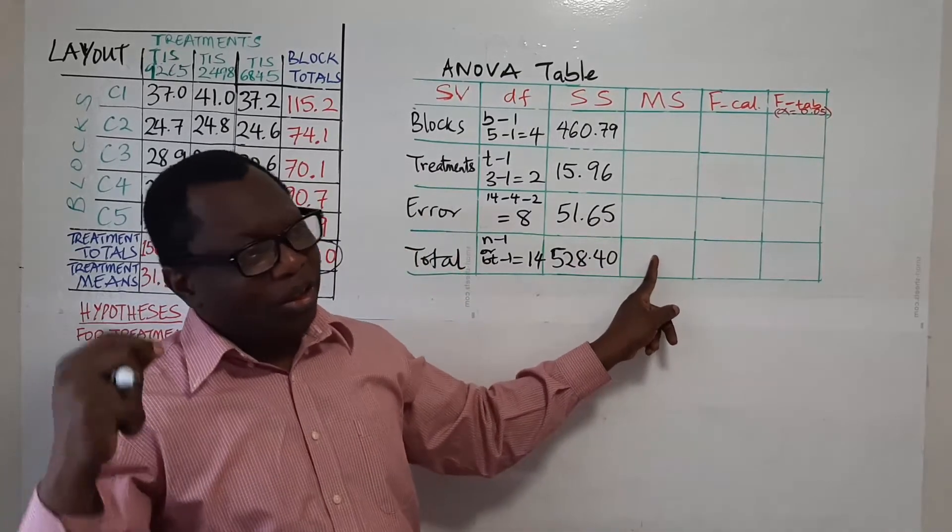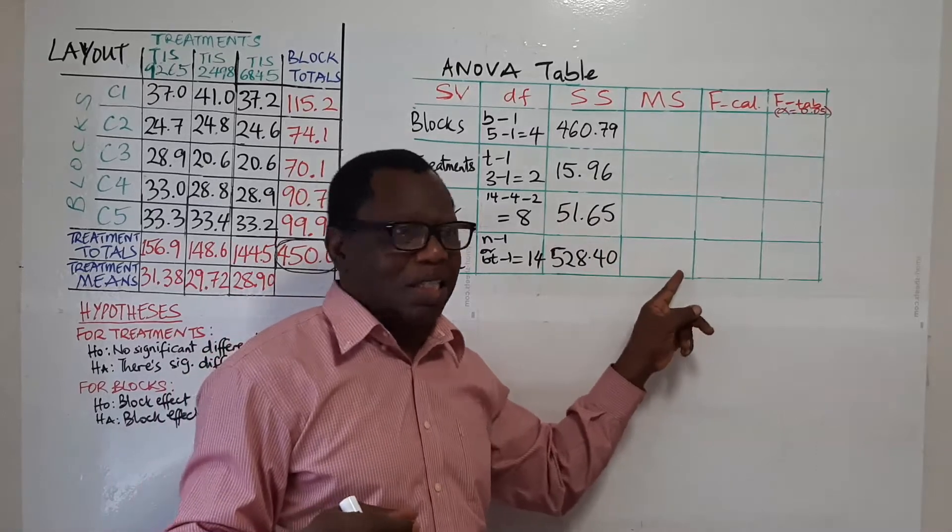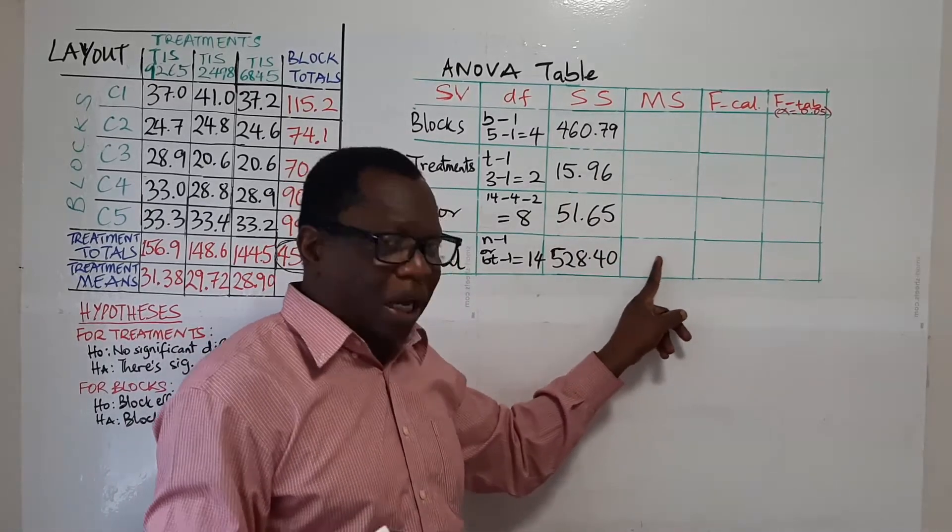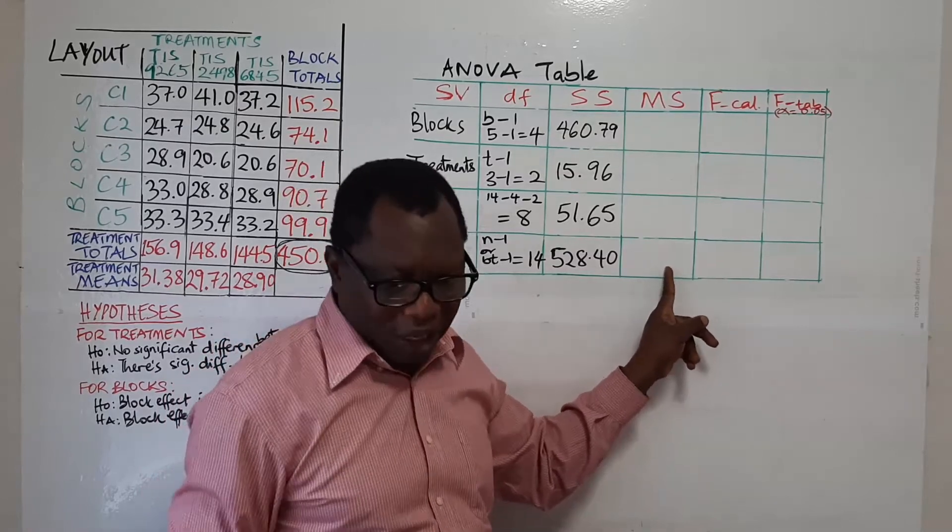Why? Because we said mean squares are not additive. That's the reason. So we don't compute anything here. So in any ANOVA table this space would be left blank.